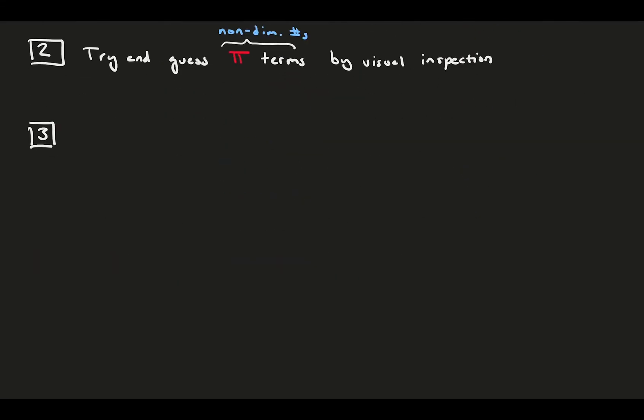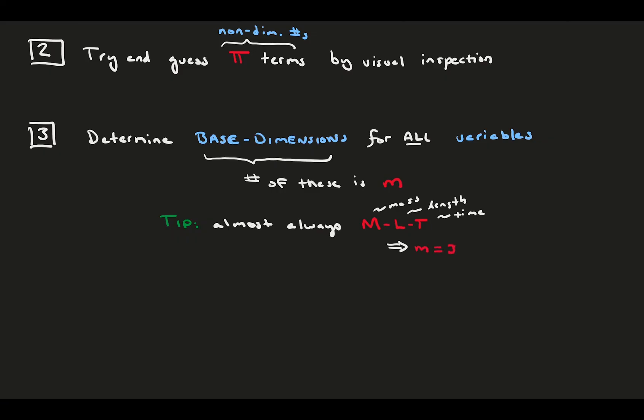For step three, we determine the base dimensions for all of our variables. Remember, base dimensions are mass, length, and time, among others. The number of base dimensions that exist in your problem is m. Almost always in fluids, m equals three, because we generally work with only mass, length, and time. However, you could have a different problem, like in electrical engineering. You can deal with things like electrical current as a fourth base dimension.